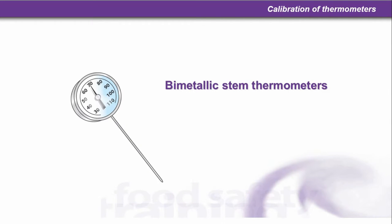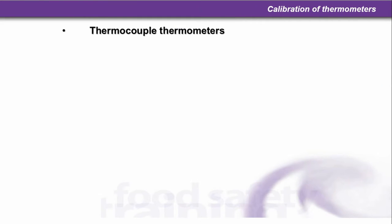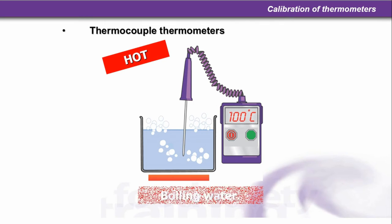Calibration of thermometers. Bi-metallic stem thermometers should not be used because they are not tip-sensitive — we need to get the tip right into the core, the center of the food being checked, to indicate the core temperature. We need to use thermocouple thermometers instead. To calibrate them, we can immerse in a mixture of ice and water and the temperature should be around 0°C plus or minus 1°C. We can also use boiling water at 100°C — straight from the kettle, for example — and check that the probe reads that temperature.